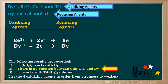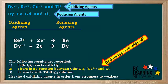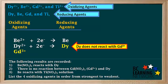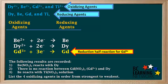Now we look at the second result: there is no reaction between GD(NO3)3 and DY metal. GD(NO3)3 is the source of the GD3+ ion. Since there is no reaction, DY does not react spontaneously with GD3+. Therefore, we write GD3+ below DY2+ on the left side, so DY is above GD3+ on the right — consistent with there being no spontaneous reaction between DY and GD3+. The reduction half reaction for GD3+ is GD3+ + 3e⁻ → GD metal.